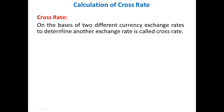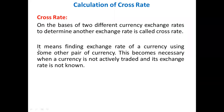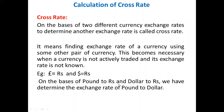Before going to the calculation of Cross Rate, first we know what is Cross Rate. On the basis of two different currency exchange rates, to determine another exchange rate is called Cross Rate. It means finding the exchange rate of a currency using some other currency pair. This becomes necessary when a currency is not actively traded and its exchange rate is not known. For example, if we know the value of Pound in Rupees and Dollar in Rupees, then on the basis of Pound-to-Rupees and Dollar-to-Rupees, we can determine the exchange rate of Pound to Dollar.